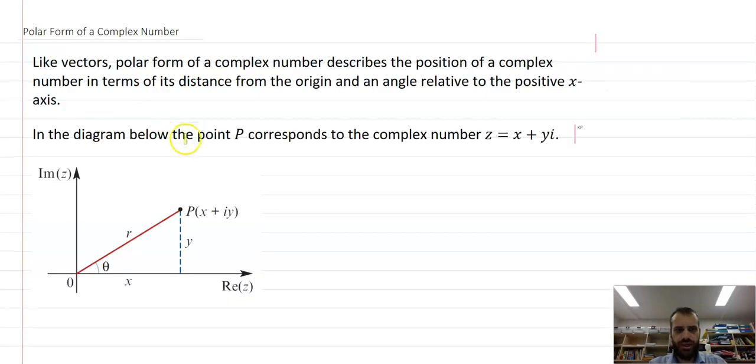So here's our complex number here, we'll call it complex number P. And it's got a real component which is given by x, and it's got an imaginary component which is given by the value of y.